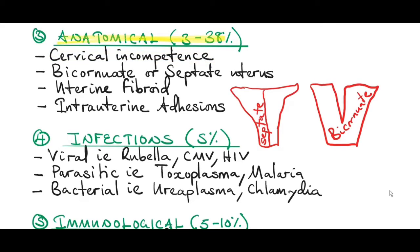Other anatomic abnormalities include a bicornuate or a septate uterus. In a septate uterus, there is a septum inside dividing the uterus into two. In a bicornuate uterus, the uterus is trying to divide into two parts. This septum and division reduce the intrauterine volume, leaving reduced space for the fetus to grow, which can result in a miscarriage. In some situations, a fetus can implant into the septum instead of the endometrium, and since the septum has poor blood supply, this also results in a miscarriage.